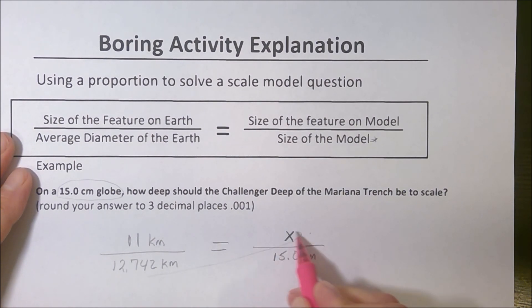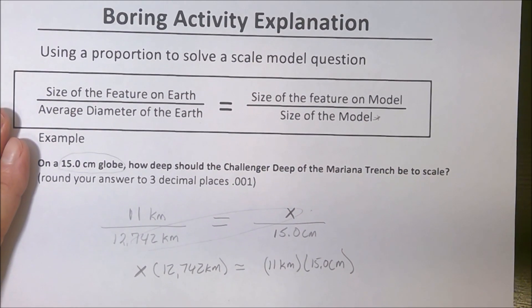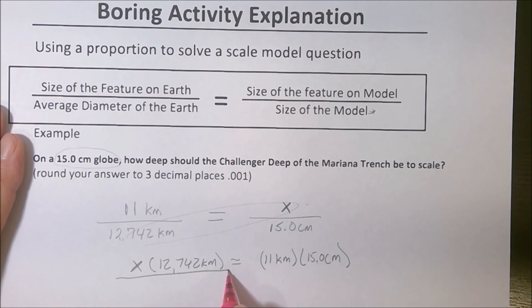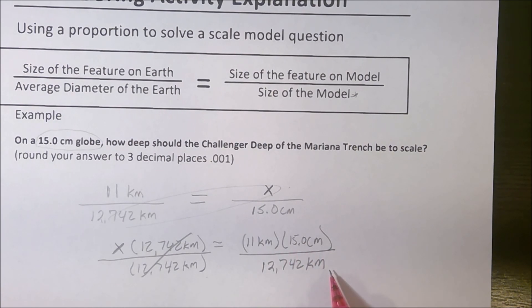Now, I hope that you know, to solve a proportion, we can cross-multiply. So if I'm doing this, I have x times 12,742 kilometers would equal 11 kilometers times 15.0 centimeters. So I cross-multiply, so I need to find x by itself, so I'm going to divide both sides by 12,742 kilometers. This cancels, so then I have 12,742 kilometers here, so if I can just plug this into my calculator, I can solve for what the correct scale height should be.